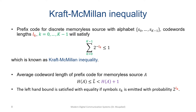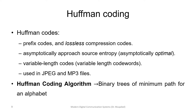One important example of prefix codes is Huffman coding. Huffman codes are prefix codes and lossless compression codes. They asymptotically approach the source entropy and are asymptotically optimal — as we increase the sequence length, we get close to optimal. They are variable-length codes, meaning different symbols have different length codewords, and they are used in JPEG and MP3 files. The algorithm is based on binary trees of minimum path length.